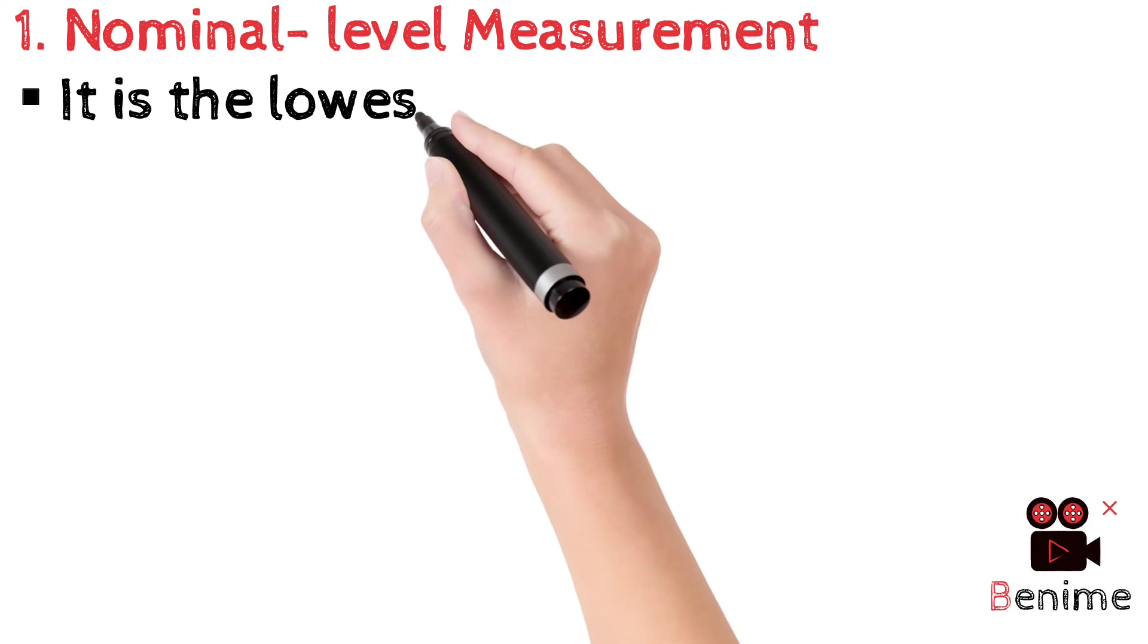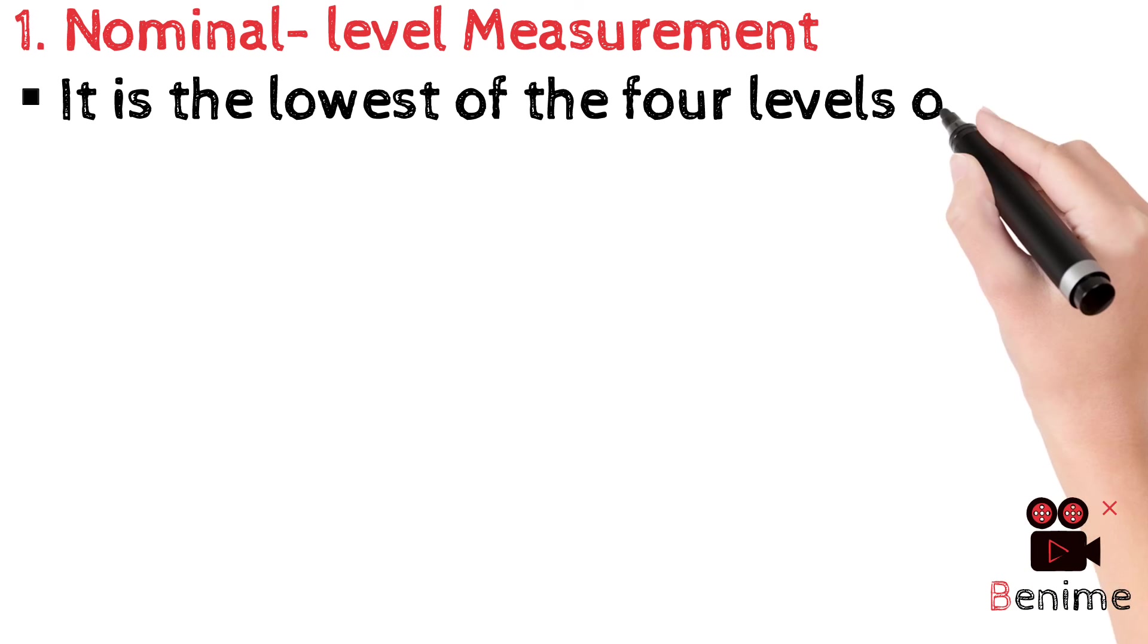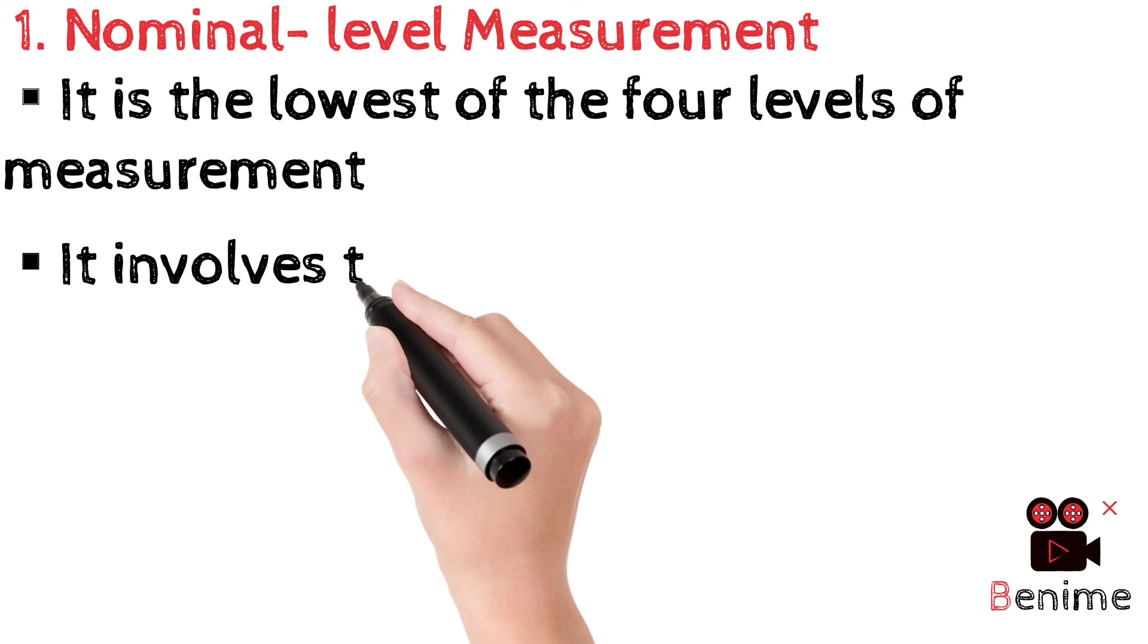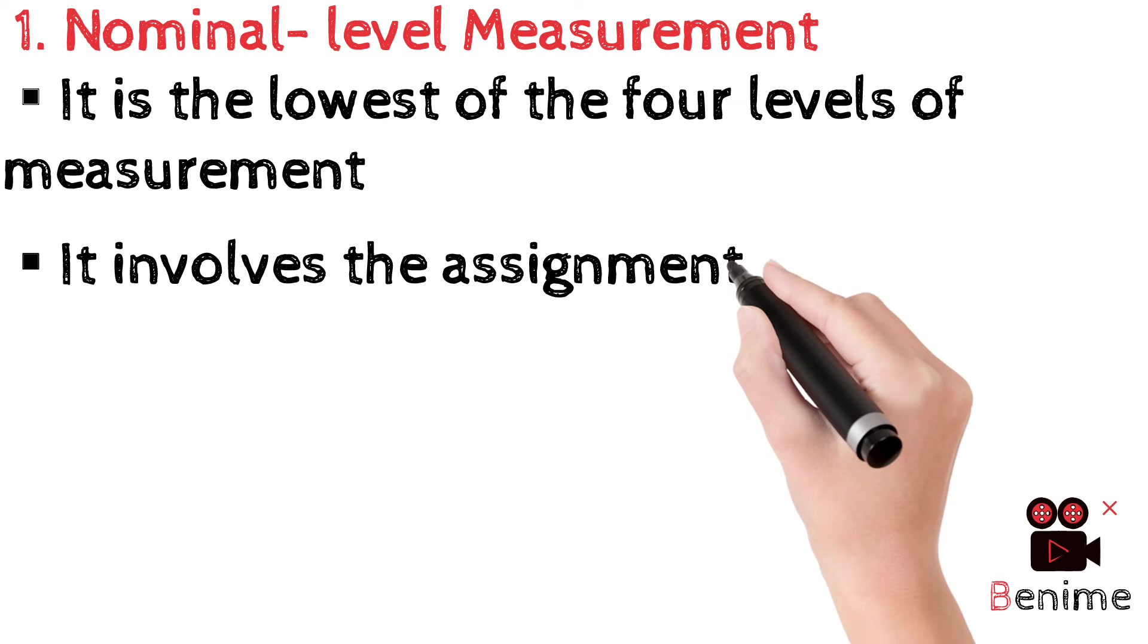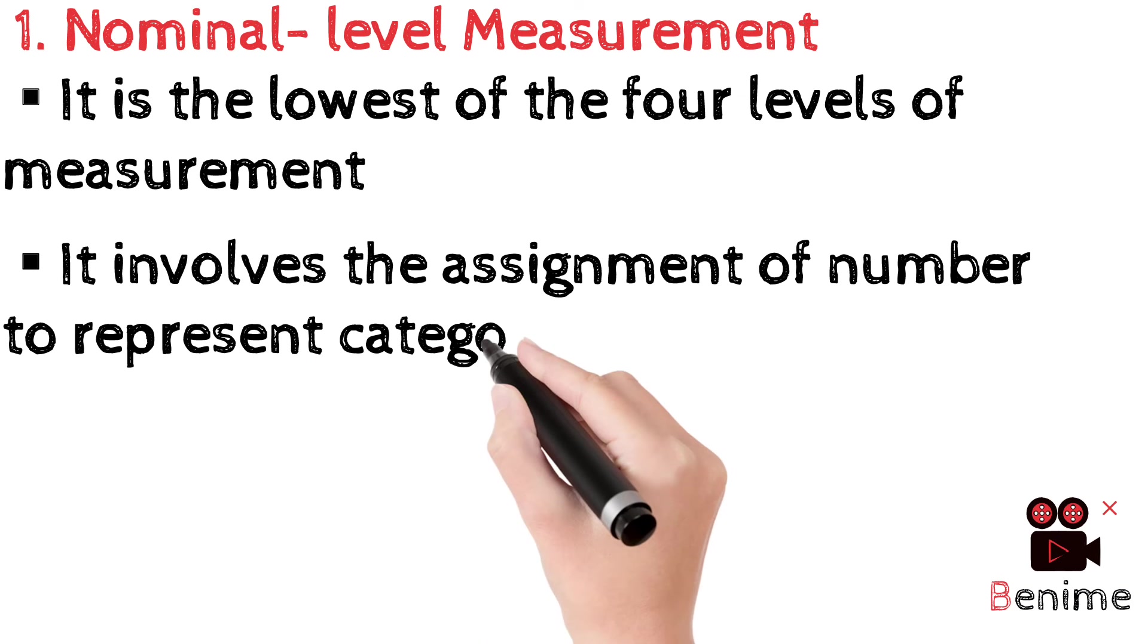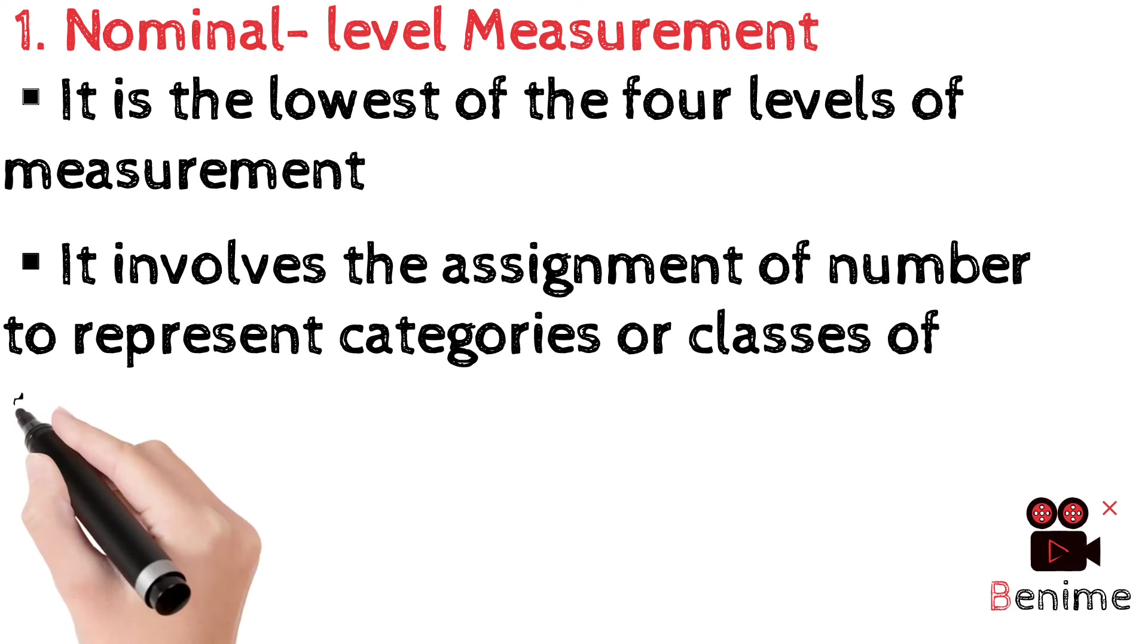First one, nominal level measurement. It is the lowest of the four levels of measurement. It represents categories. Categories are not more or less than each other but different from one another in some way. We can't say male higher than female or female higher than male because it is not more or less but different in some other way.